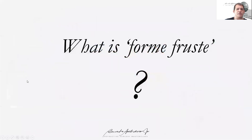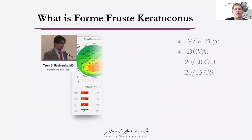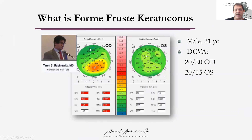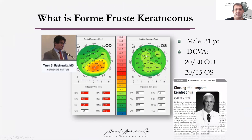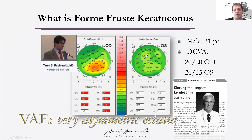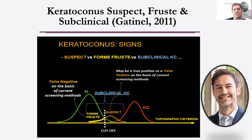So we have to understand what forme fruste keratoconus is. It may be defined as the eye with abnormal topography from a patient that has normal slit lamp findings and distance-corrected vision of 20/20. Steve Klyce, differently from Yaron Rabinowitz, in a deeper understanding of forme fruste keratoconus, would say that the fellow eye with normal topography of those asymmetric cases — which we call very asymmetric ectasia cases — have taught us tremendously.